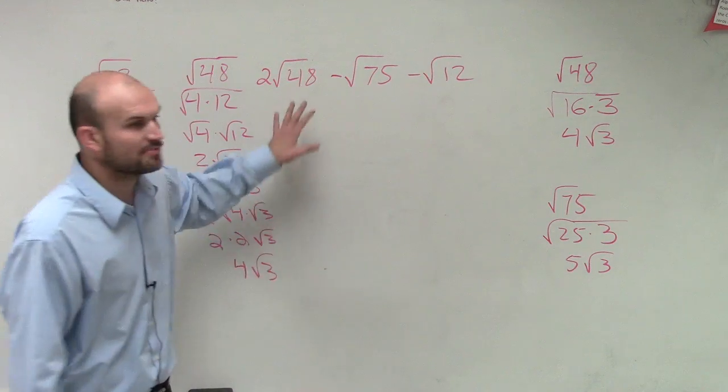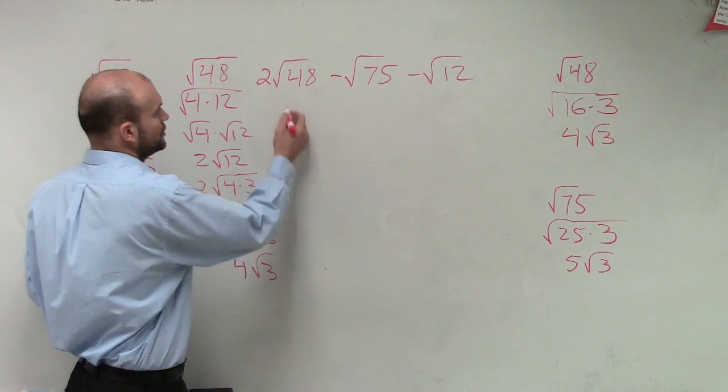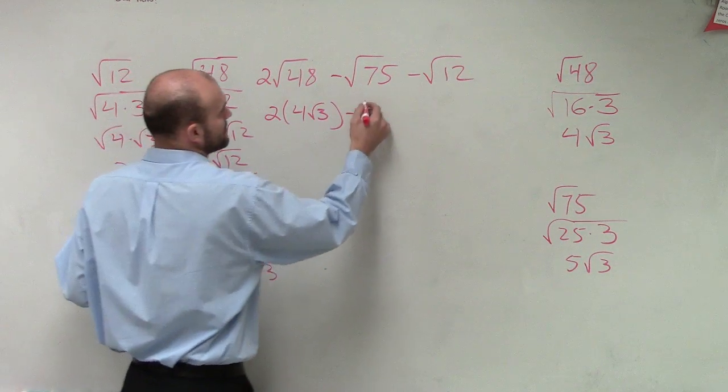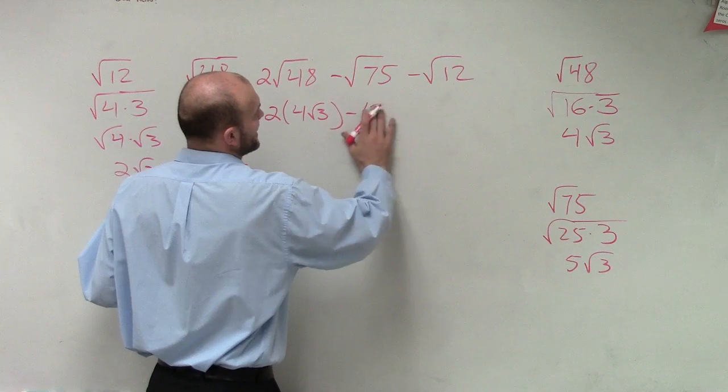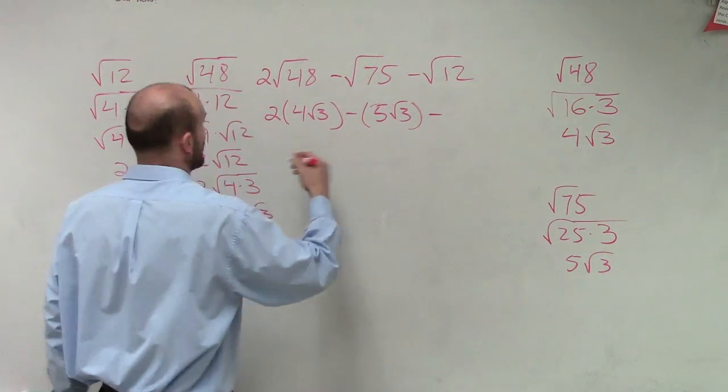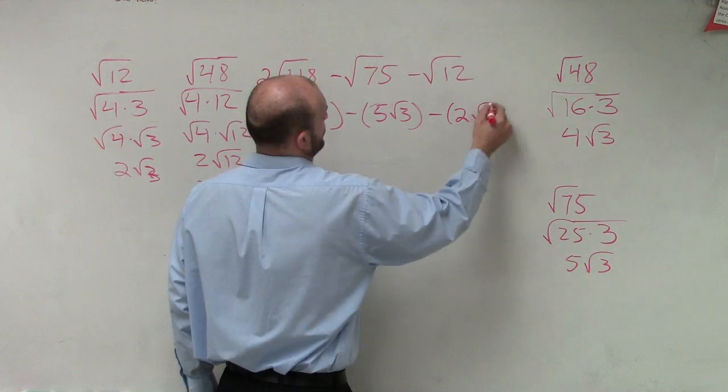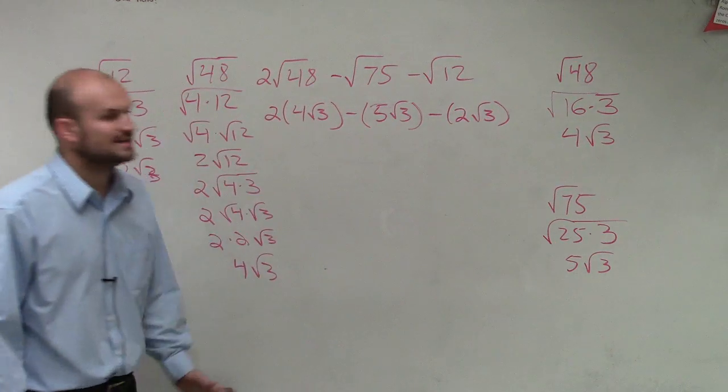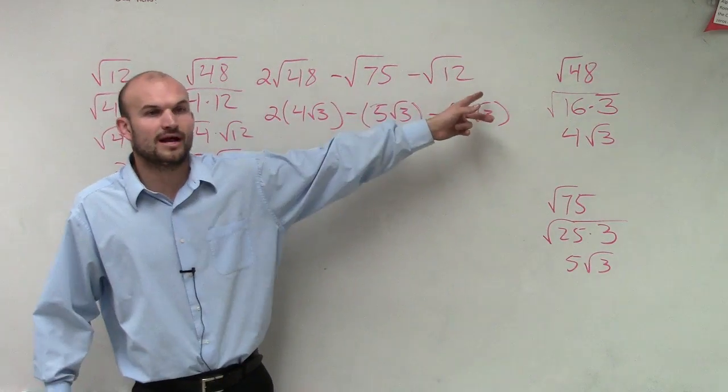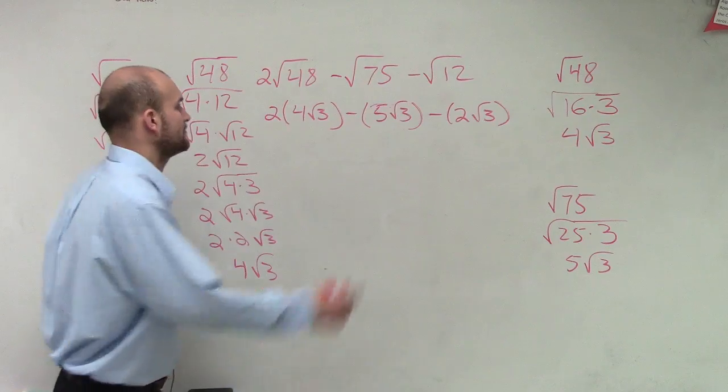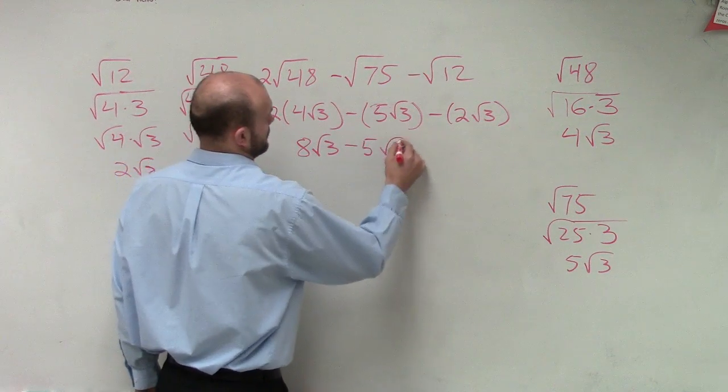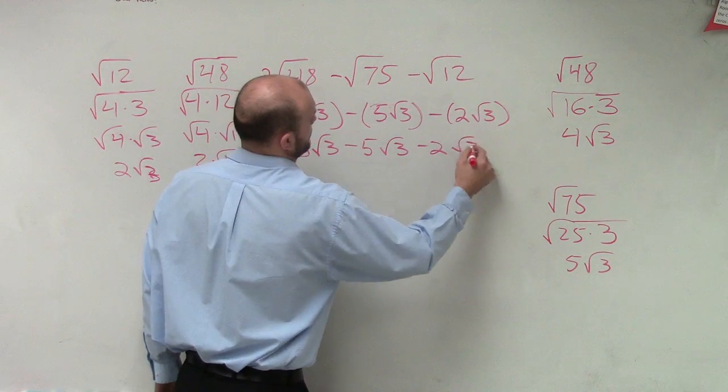So now, let's break these all up. So we said 2 times the square root of 48 was going to be 4 radical 3, minus 5 radical 3, minus 12, which was 2 radical 3. Does everybody see how what I did is, all I did was replace each one of my radical numbers in their simplified form. Now, I can distribute.